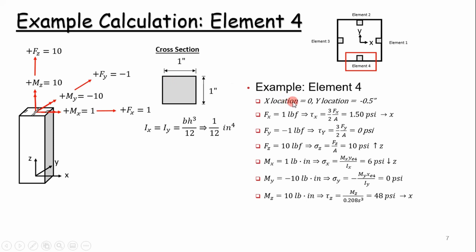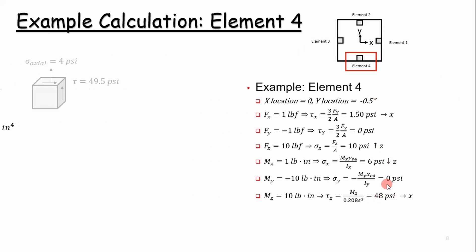I'm given my x location and y location. We're in the negative y direction because the coordinate system is defined in the middle of the cross section. You calculate your stresses and assign them a vector direction. Once you do all that, you can add them together — superimpose them — and put them on a stress element. Our axial load comes out to 4 psi after adding all the components acting in the z direction, and our shear stress is 49.5 psi.